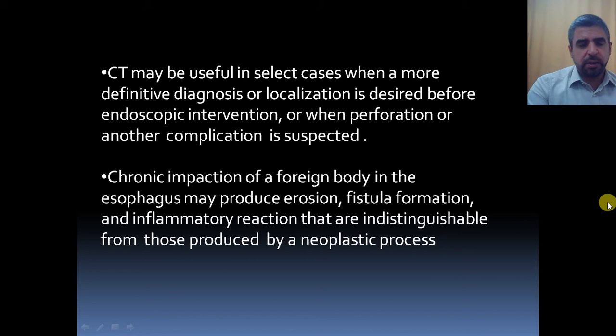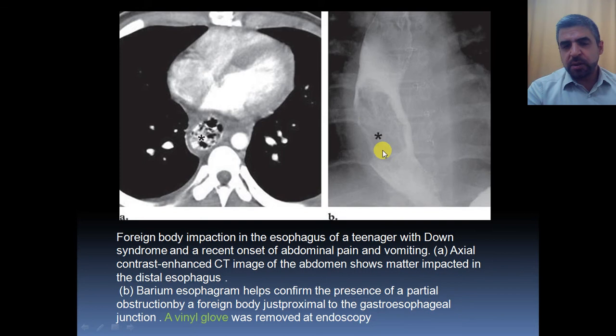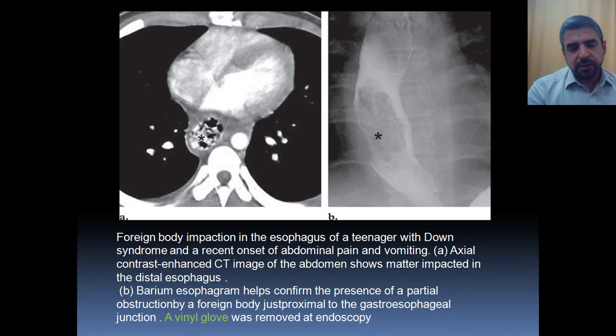For example, you can see here a foreign body impaction in the esophagus of a teenager with Down syndrome. There is something within the esophageal lumen containing multiple air bubbles and oral contrast retained within it. After endoscopic retrieval, it appears as a filling defect within the lumen of the esophagus with no signs of perforation or leak. After endoscopic retrieval, it turned out to be part of a vinyl glove, because the patient has intellectual disability — it's a case of Down syndrome.